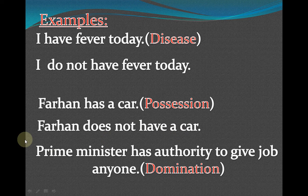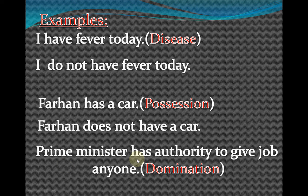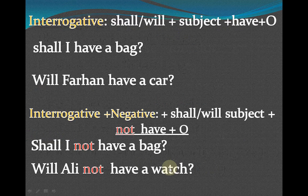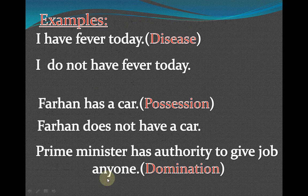'Prime minister has authority to give a job to anyone.' Here we are showing domination. 'Prime minister' is singular, so 'has' is used in this affirmative sentence. 'Authority to give job' shows domination — the prime minister has control and power to give a job. Whenever we have to show power or control, we use 'have/has' sentences to show domination. Whenever we have to show position or property, we also use 'have/has' sentences.